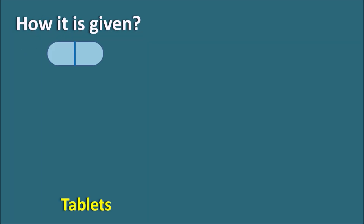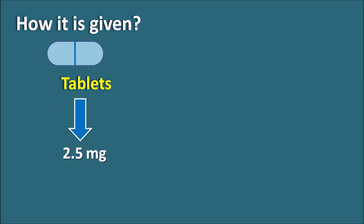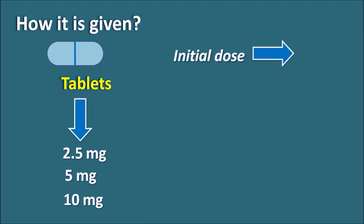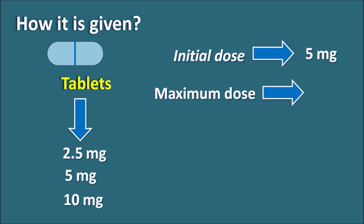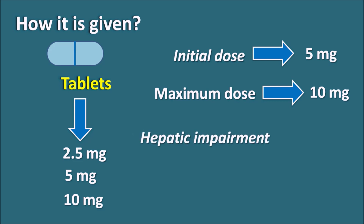How is it given? Amlodipine is available as a tablet in doses of 2.5 mg, 5 mg, and 10 mg. The initial dose is 5 mg per day and the maximum dose is 10 mg. In patients with severe hepatic impairment, the initial dose may be reduced to 2.5 mg.